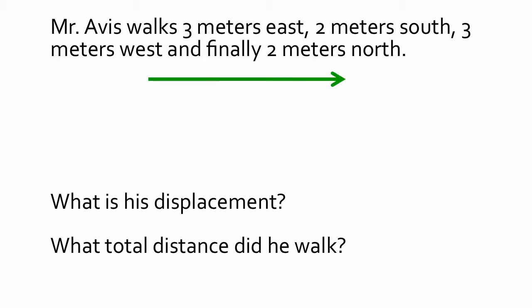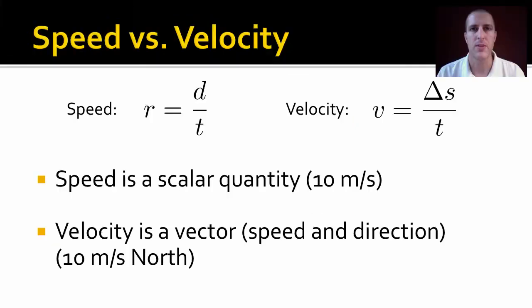Now, let's look at an example of these. So, if I walk 3 meters east, 2 meters south, 3 meters west, and then 2 meters north, what is my displacement? How far am I from where I started? Well, I'm in the same place I started, so my displacement is going to be 0. But what total distance did I walk? Well, if you add up all those distances, you end up with 10 meters. It doesn't matter what direction I'm going. All that matters is 10 meters went beneath my feet. So, that's the difference between distance and displacement.